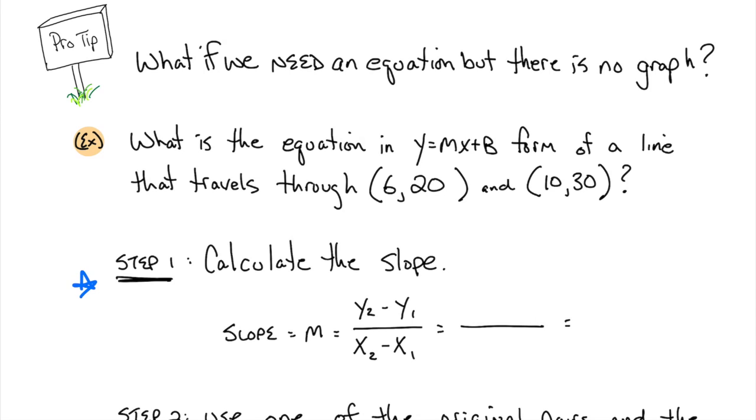Step number one is going to be calculate the slope. And we have a formula for slope. So the formula is going to rely upon the knowledge that you have x's and y's, the first pair and the second pair. You're going to subtract the y's. So 30 minus 20 on the top and 10 minus 6 on the bottom. 10 over 4 is,